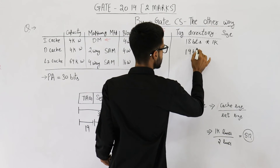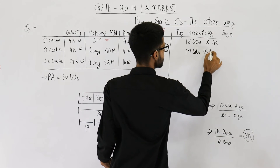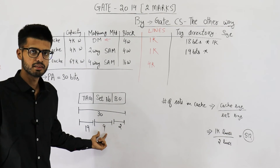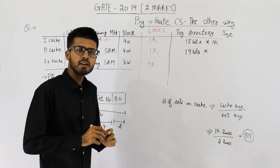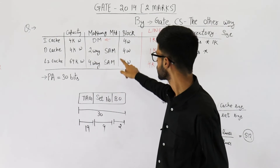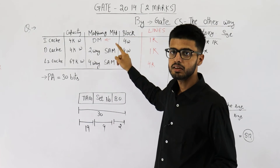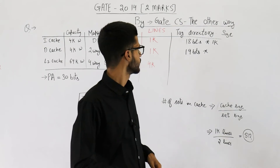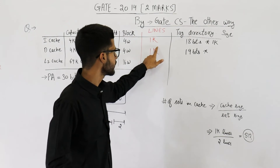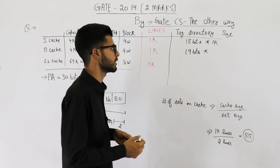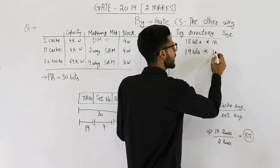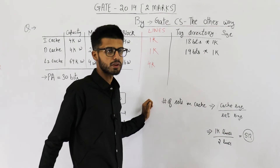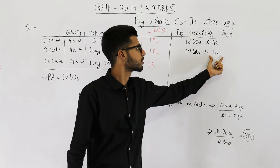So in the D-cache, the tag is 19 bits. Even though we are using set associative mapping, each line still has a tag, and the number of lines is 1K. So the tag directory size for D-cache = 19 bits × 1K.